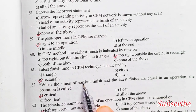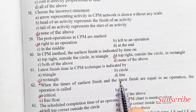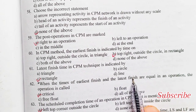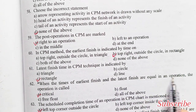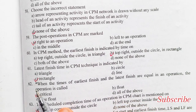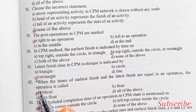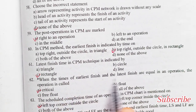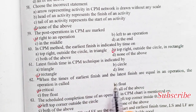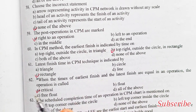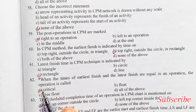When the earliest finish time and the latest finish time are equal in an operation, the operation is called: critical, float, free float, or all of the above. Option A is the right answer — critical.